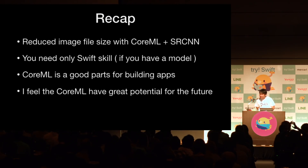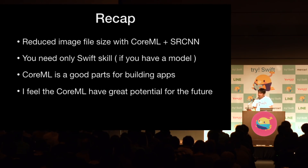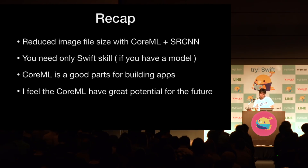In summary: I can reduce image file size with Core ML and SRCNN. You need only Swift skills if you have a model. Core ML is a great framework for building apps, and I feel that Core ML has great potential for the future.